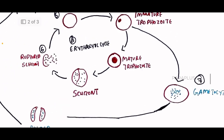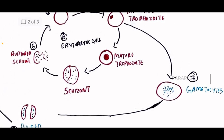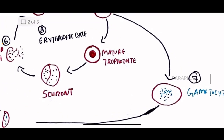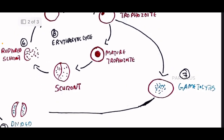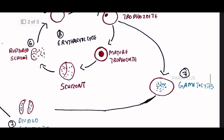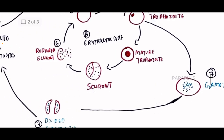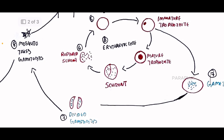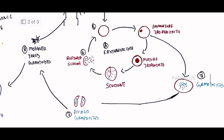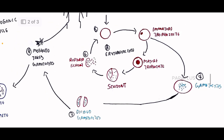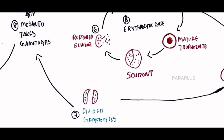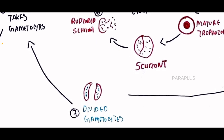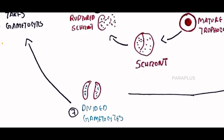The trophozoite can also become a gametocyte. The next level is gametocyte formation. The gametocyte divides into two types — there are two gametocytes produced.